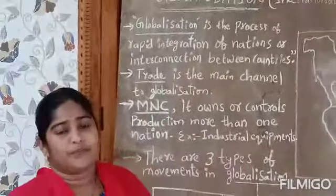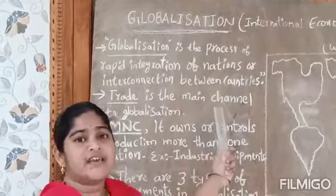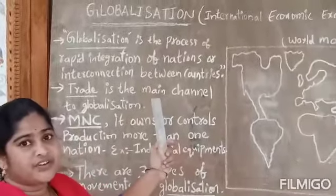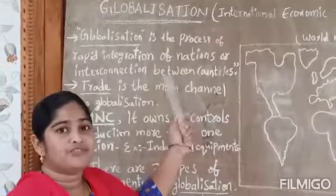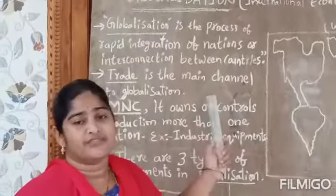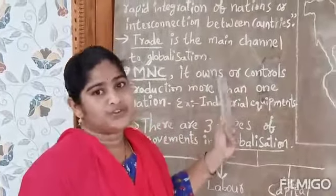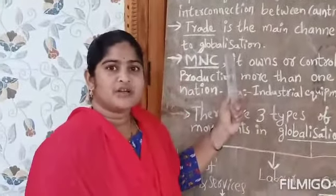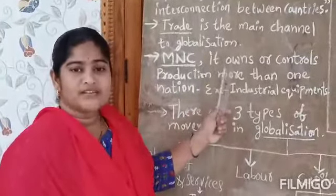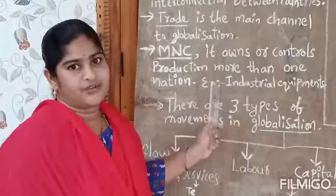Globalization is a process of rapid integration of nations and interlinking between nations. This integration and interlinking happens through trade. Trade is the main channel of globalization. In this process, MNCs play a vital role. A multinational company owns and controls the production process in more than one nation.